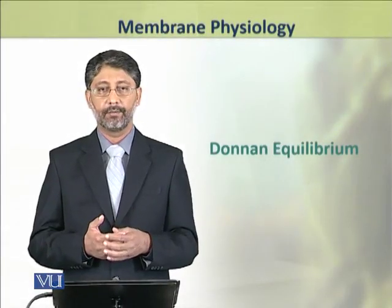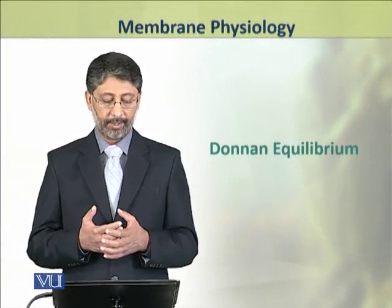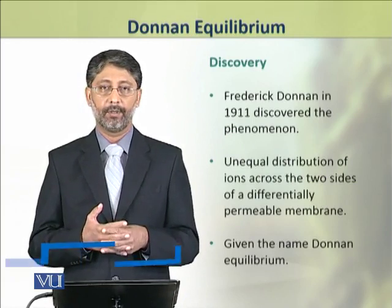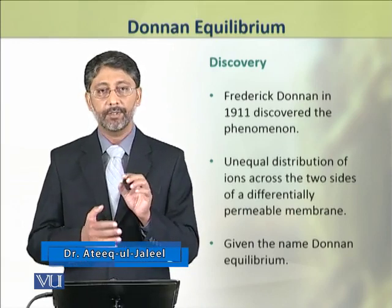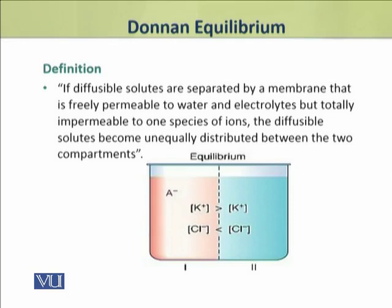Dear students, in this module we shall discuss the phenomenon of Donnan equilibrium, discovered by Frederick Donnan in 1911. This phenomenon describes the unequal distribution of ions across two sides of a differentially permeable membrane. It is defined as: if diffusible solutes are separated by a membrane freely permeable to water and electrolytes but totally impermeable to one species of ions, the diffusible ions become unequally distributed between the two compartments.